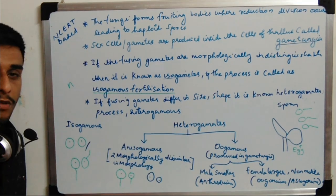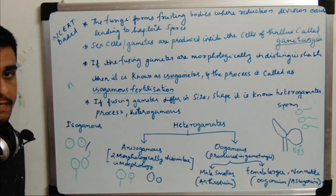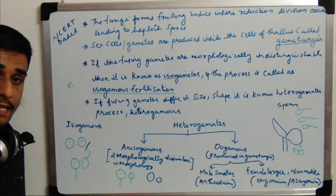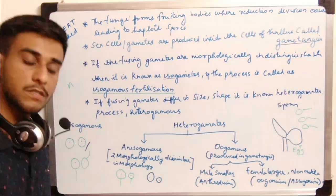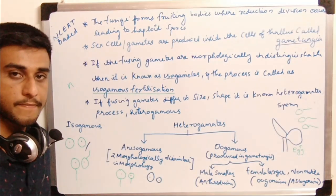If the gametes are distinguishable — we can say which is male and which is female — they are known as heterogametes. Hetero means different, and iso means the same. In heterogametes we can easily distinguish the gametes into male and female.